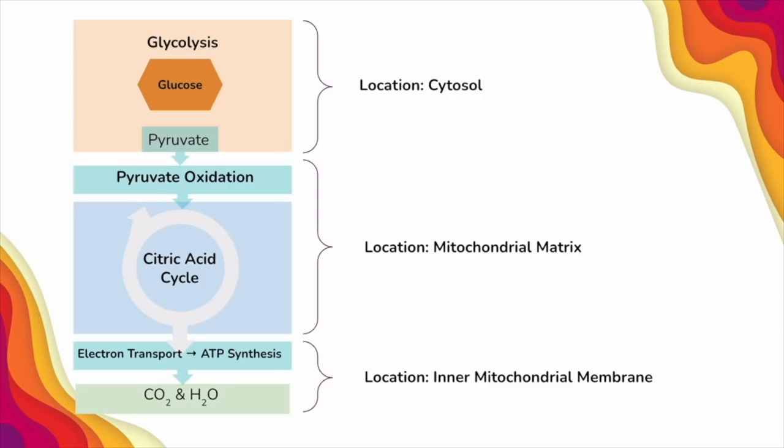Cellular energetics is another really important topic in AP biology, beginning with cellular respiration and the steps involved. The three main parts are glycolysis, the citric acid cycle, and the electron transport chain with oxidative phosphorylation. Glycolysis occurs in the cytosol outside of the mitochondria. The citric acid cycle occurs in the mitochondrial matrix, and the electron transport chain occurs across the inner mitochondrial membranes to establish a proton gradient for ATP synthesis. Remember that oxygen is our final electron acceptor.